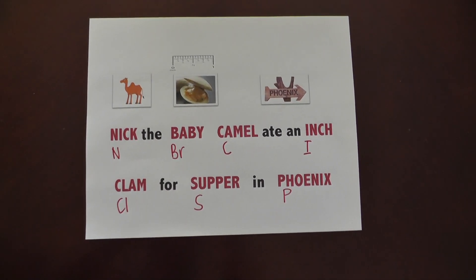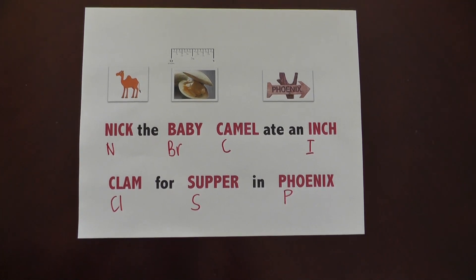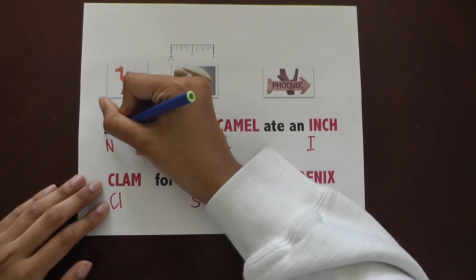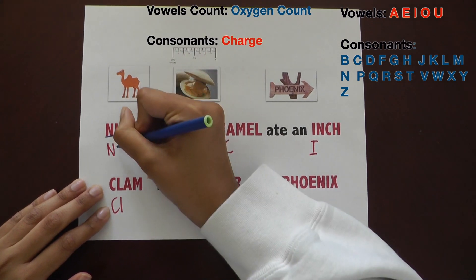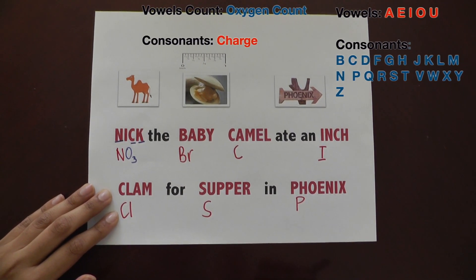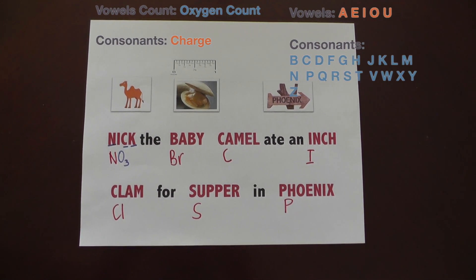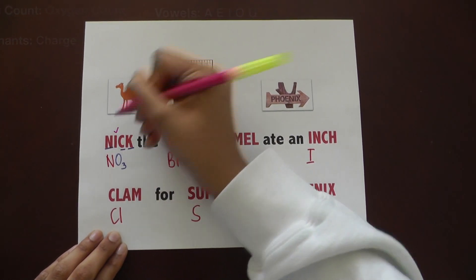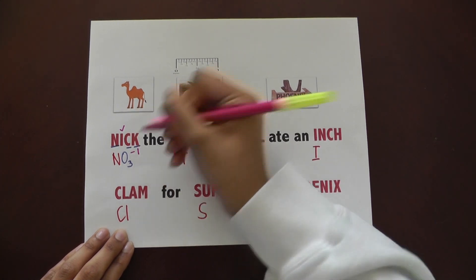The number of consonants in the word stands for how many oxygens are in the polyatomic ion. In Nick, there are 3 consonants — N, C, and K — which makes 3 oxygens. The number of vowels stands for the charge of the polyatomic ion. In this case, I is the only vowel, which makes negative 1 as the charge.